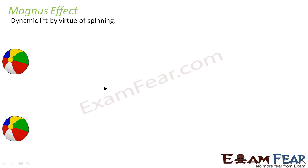Dynamic lift is observed in aeroplanes and dynamic lift is also observed in case of a spinning ball. This dynamic lift by virtue of spinning is known as Magnus effect. So Magnus effect is the same thing as dynamic lift, just that it is a special name given to dynamic lift which occurs by virtue of spinning.